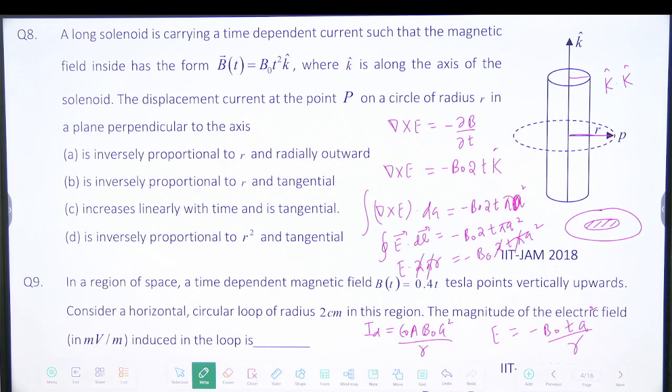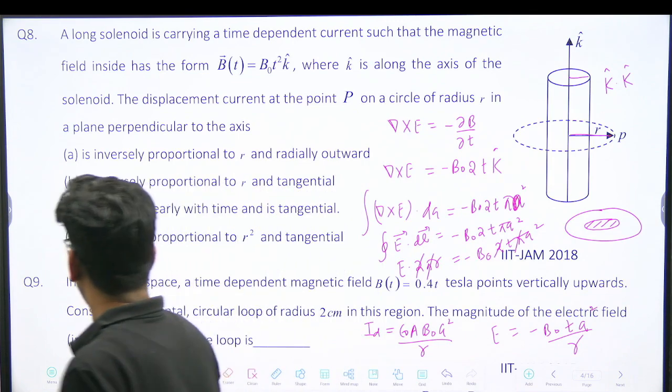So it will be along... And tangential. The magnetic field is in K̂ direction, that means it is along phi. Then only it can create. So it will be tangential and inversely proportional.